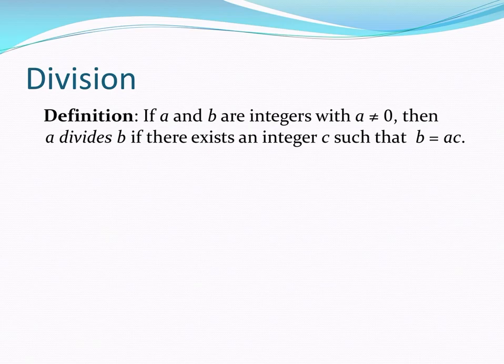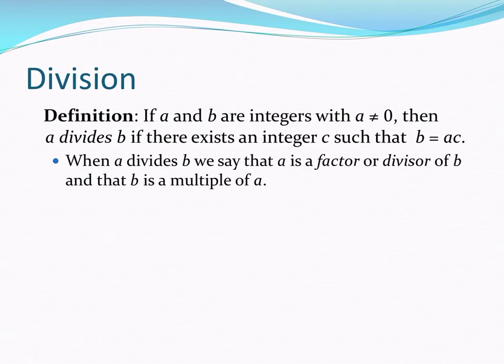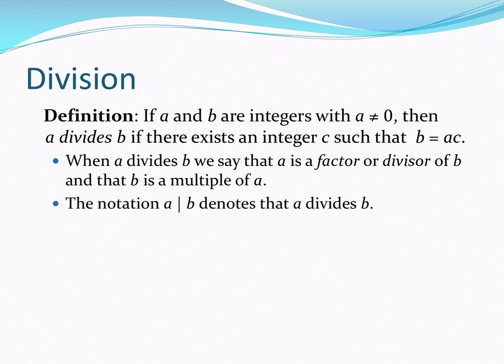If A and B are integers with A non-zero, then A divides B if there exists an integer C such that B equals A times C. When A divides B, we see that A is a factor or divisor of B and that B is a multiple of A. We have a symbol to denote this. It's a vertical bar. When you see A vertical bar B, you can read that as A divides B.